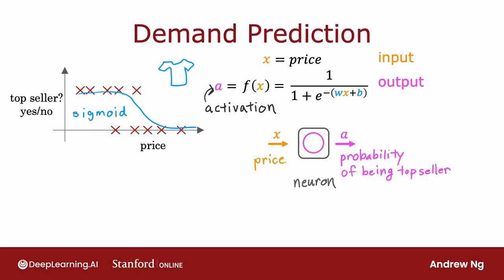Another way to think of a neuron is as a tiny little computer whose only job is to input one number or a few numbers, such as a price, and then to output one number or maybe a few other numbers, which in this case is the probability of the t-shirt being a top seller. A logistic regression algorithm is much simpler than what any biological neuron in your brain does, which is why the artificial neural network is such a vastly oversimplified model of the human brain, even though deep learning algorithms do work very well.